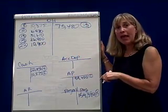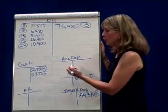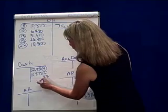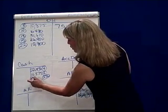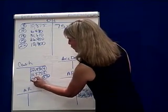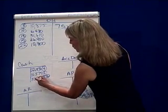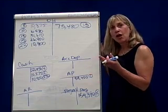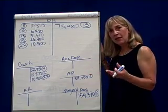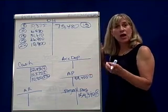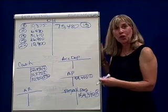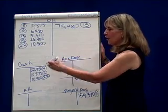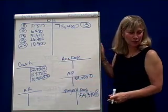It said we paid, so that means we credit cash. So on the 22nd, we're going to credit cash $10,900. So again, when we purchase product-related items that are not direct materials and not direct labor, they're debited to overhead and credited to cash.